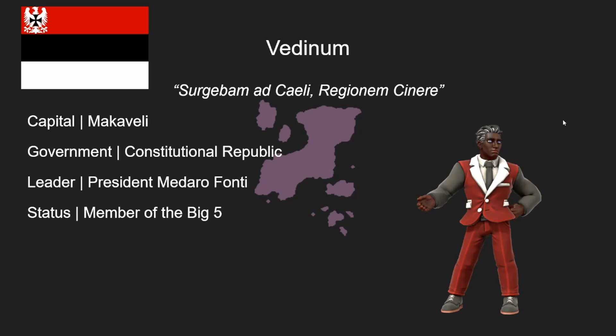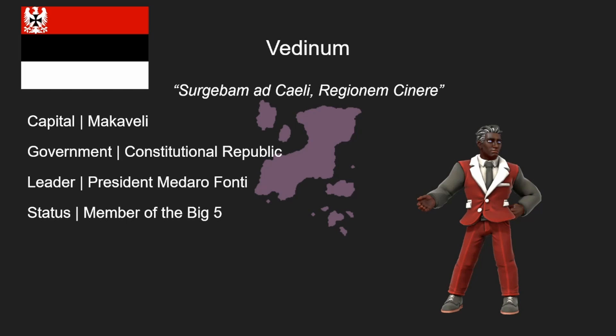Last but certainly not least in the Big Five lineup, we have Vedenim, whose motto translates to 'we rose from the ashen sky.' Vedenim is a constitutional republic led by President Madara Fonte, as well as the head of government Alaramo Saraci. It's interesting in Vedenim because the vice president and president are often from different parties — this is mostly a gesture of reconciliation and diplomacy between the once largely broken-up islands that consist of the modern Veden nation-state.